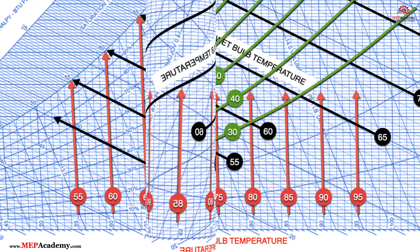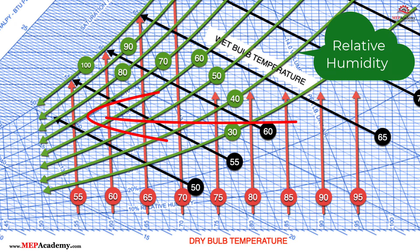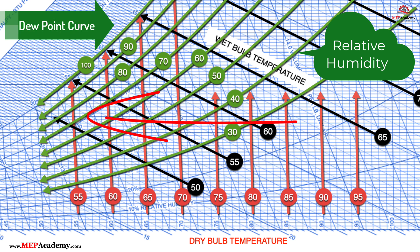This is also the 100% relative humidity line. When the air's dry bulb temperature decreases, the relative humidity increases. If the dry bulb keeps dropping lower and lower, eventually it will hit the dew point temperature. When the air reaches the dew point temperature, the relative humidity is 100%. At this point, the air is fully saturated with moisture and can no longer hold any more water vapor, which is why condensation occurs. Keep in mind, the closer the air temperature is to the dew point temperature, the higher the relative humidity will be.